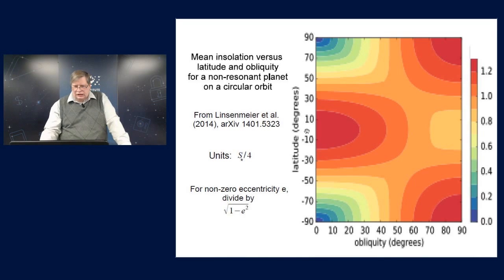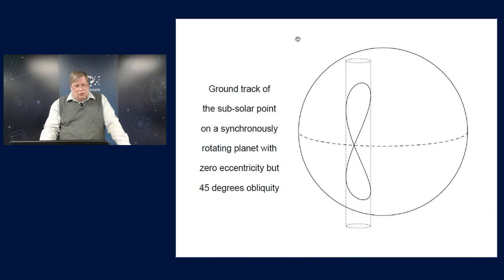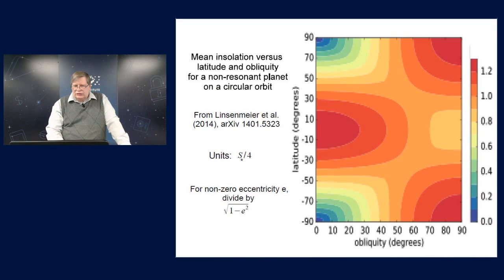Now, as you increase the obliquity, the situation becomes less extreme. The poles get a little more sunlight until when you reach a point around 50 degrees obliquity, the mean insolation is almost independent of latitude. As you go on farther to high obliquities around 80 or 90 degrees, the poles actually get more sunshine than the equator does, and so they become presumably warmer, and the equator becomes cooler.